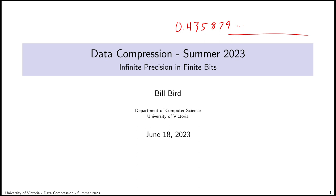The reason that's a problem is that our computer's memory only has a finite amount of space. So we're stuck in the awkward position of needing to achieve infinite precision using a finite number of bits. So what are we going to do about that?